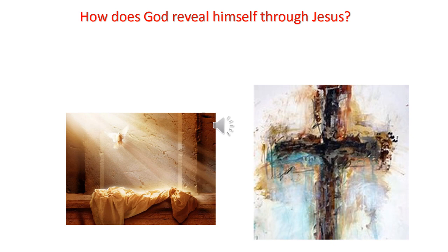The Romans executed Jesus as a criminal when he was in his early thirties. After his body vanished from his tomb, some of his followers saw him alive, risen from the dead. They began a movement called 'the Way,' now known as Christianity. Today, more than a billion people believe that Jesus is God and try to live by his teachings.